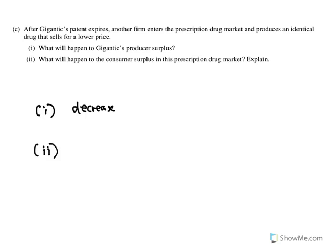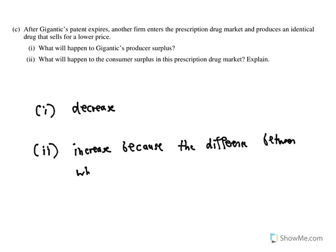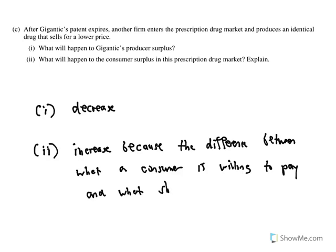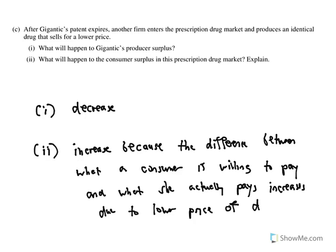For C2, what about consumer surplus? That's going to increase. Basically, producer surplus is being transferred to consumer surplus. The reason is that the difference between what a consumer is willing to pay and what she actually pays increases due to the lower price of the drug. That is the answer to question one of set two of the 2019 AP Microeconomics exam's free response section. Until next time, have a great day.